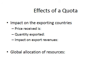The impact on the exporting country: the price received remains PW, and quantity exported goes down, so export revenue falls. One exception: if exporting countries hold the quota rents themselves, the price they receive goes up, but quantity exported still falls. Whether revenue rises or falls then depends on the elasticity of demand for the exports.